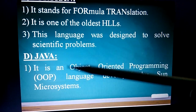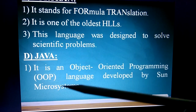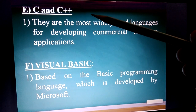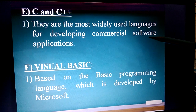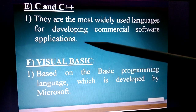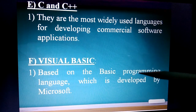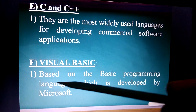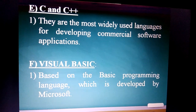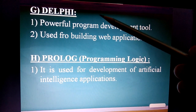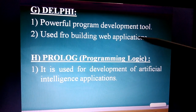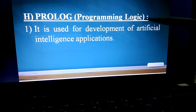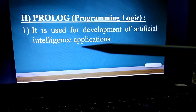Java is an object-oriented programming language, also called OOP, developed by Sun Microsystems. C and C++ are the most widely used languages for developing commercial software applications. Visual Basic is based on the BASIC programming language and was developed by Microsoft. Delphi is a powerful program development tool used for building web applications. Prolog, which means Programming Logic, is used for developing artificial intelligence applications.